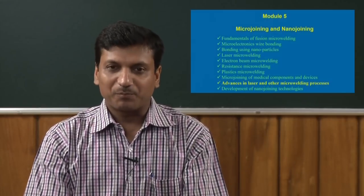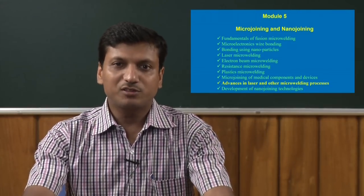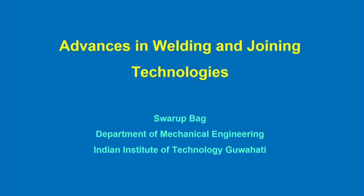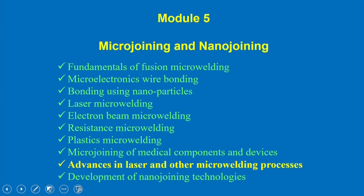Good afternoon everybody. Today I am going to start another module of this advances in welding and joining technologies — that is micro joining and nano joining, this is module 5. In this module I will try to demonstrate different micro joining and nano joining technologies that have been developed recently. This micro joining and nano joining is significant specifically in today's industry because of the minimization of the product size, their geometric size, their applicability, and with the development of different devices like micro devices and nano devices.